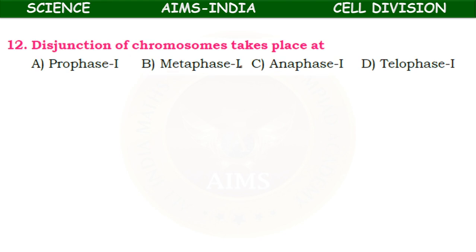Disjunction of chromosomes takes place during — prophase 1, metaphase 1, anaphase 1, or telophase 1? In anaphase 1, the segregation or disjunction of chromosomes takes place. Segregation or disjunction means the movement of daughter chromatids to each homologue occurs, or chromosome sets are separated — that is called disjunction.